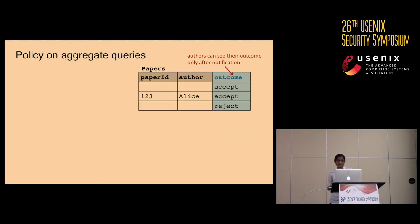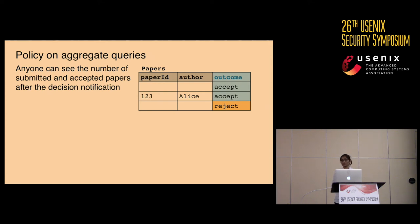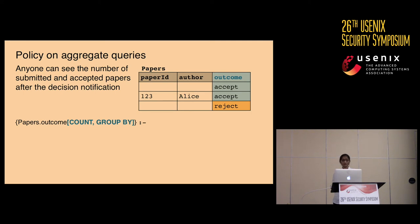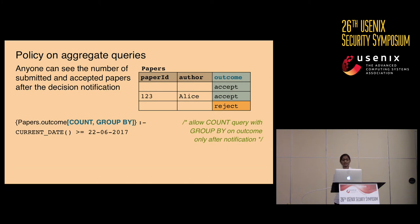Now let me describe an example of a policy on aggregate queries. Similar to reviews, authors can see the outcome of submitted papers after the decision notification — a policy described on the outcome column from the papers table. If we also want to allow authors to see the number of submitted and accepted papers after the decision notification, we express a policy on the outcome column allowing them to count and optionally group by outcome values. The policy is again a SQL WHERE clause checking that the query is made only after the decision notification deadline. If this aggregate policy is not specified, authors can only see individual paper outcomes, whereas this policy allows them to get aggregated results.